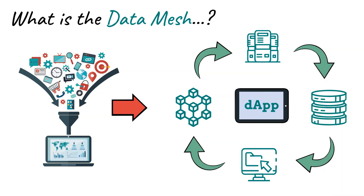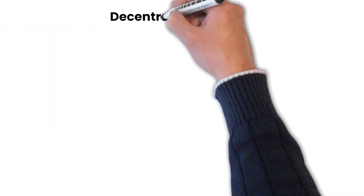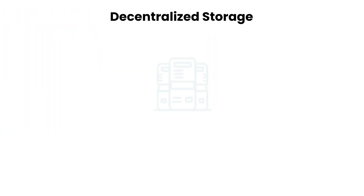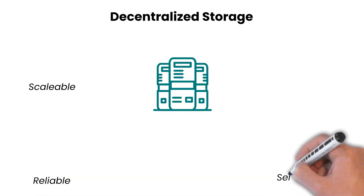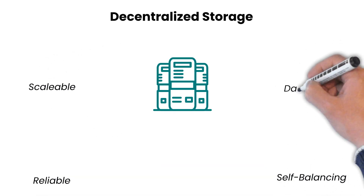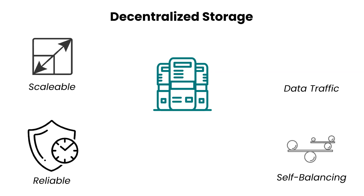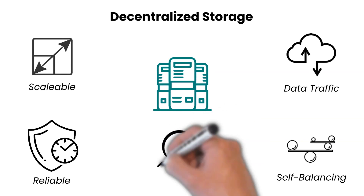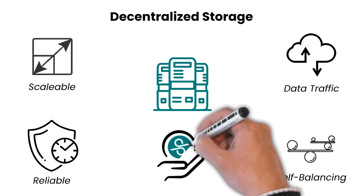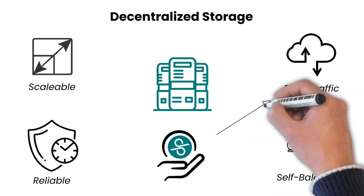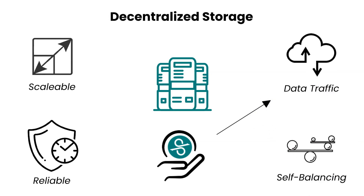Let's look in more detail at the four pillars of the Stratos data mesh. Decentralized storage: the Stratos decentralized storage network is a scalable, reliable, self-balancing network driven by data traffic. It accesses data efficiently and safely. Users have the full flexibility to store any data regardless of the size and type. Users will only ever pay for the amount of traffic they generate, rather than for oversized and often wasted static storage.